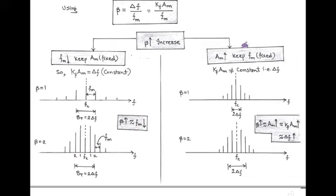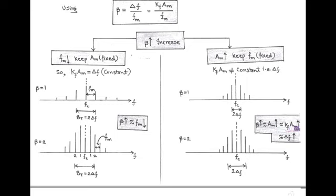Next, in the second case, when we keep modulating frequency constant, KF·AM is not constant — or we can say that ΔF is also not constant. To clarify this, we use the FM spectrum having modulation index β = 1. Here the transmission bandwidth is 2·ΔF. Now, as modulation index β increases, the amplitude of the message signal AM increases, which results in KF·AM increasing and ΔF increasing. That is according to the formula: β = KF·AM / FM.